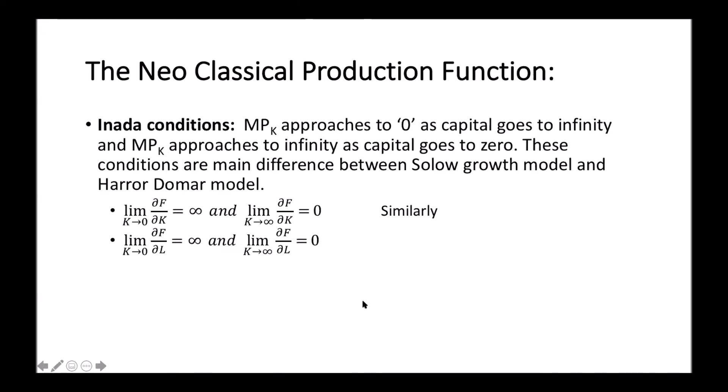These are the major differences between the Solow growth model and Harrod-Domar model. The fourth property of the neoclassical production function is called essentiality.